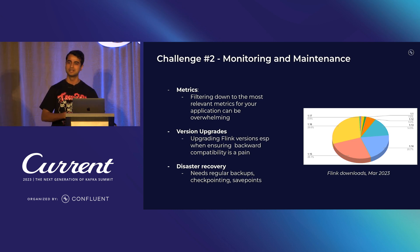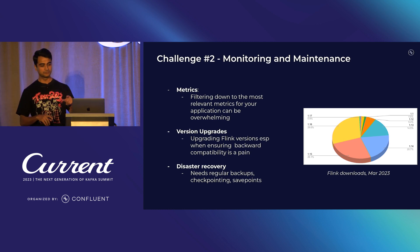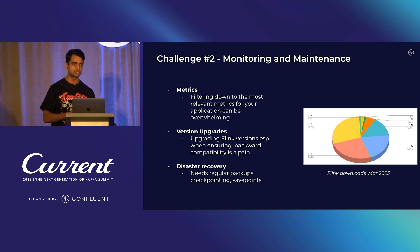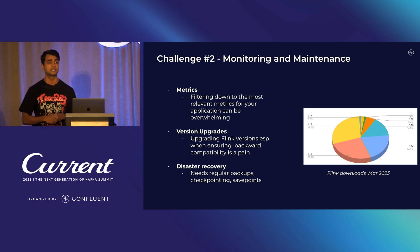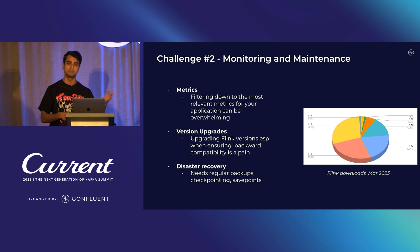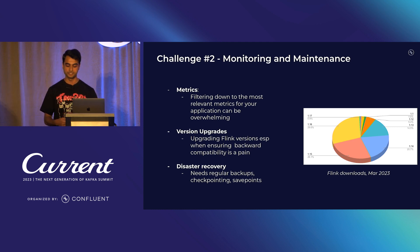Challenge number two is monitoring and maintenance. Flink provides all the metrics you would possibly need, but how do you know which ones are important? Then there are version upgrades: looking at Flink downloads from March of this year, 70% of downloads are actually from unsupported versions — 1.15 and before — where you won't get community support. If backward compatibility is a concern, version upgrades become a big issue. And finally, disaster recovery: you'll have to manage your own snapshots and save points.